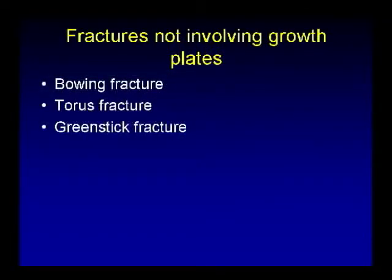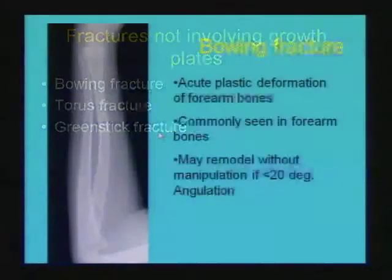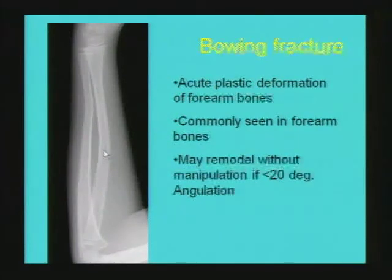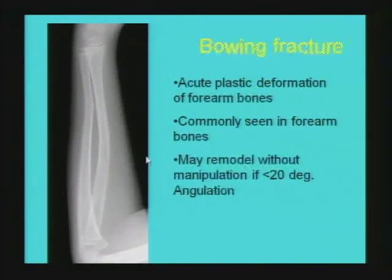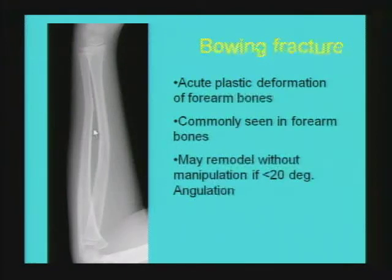Fractures not involving the growth plate in pediatric population show typical patterns: bowing fracture, torus fracture, and greenstick fracture. A bowing fracture is a plastic deformation of the bone; the greater plasticity of pediatric bone means it does not fracture up to a certain degree of tensile loading. Commonly seen in forearm bones, prognosis is excellent and it may remodel even without manipulation if angulation is less than 20 degrees.